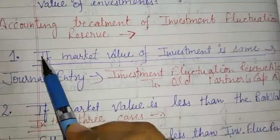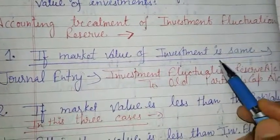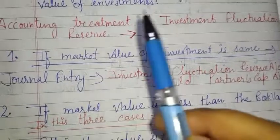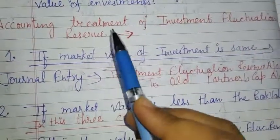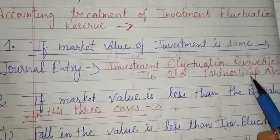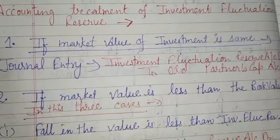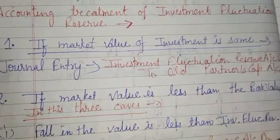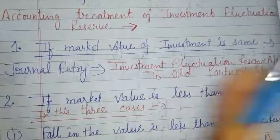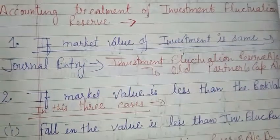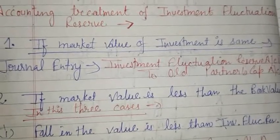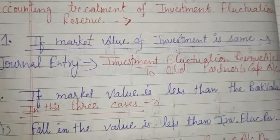The first case is: whenever in a question the investment amount and market value are both the same, then in that condition, whatever money is in the Investment Fluctuation Reserve Account - that entire reserve balance will be distributed among all old partners in their old profit sharing ratio, because there is no change between market value and book value. So the entire money is distributed to old partners before admission of a new partner.